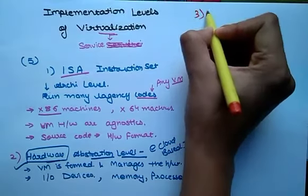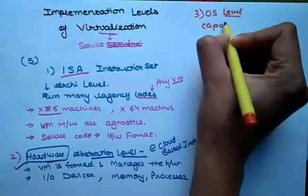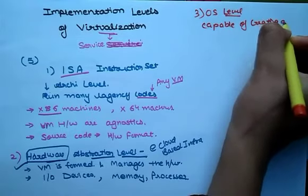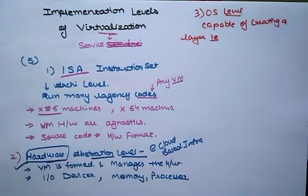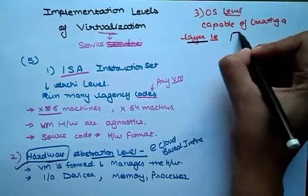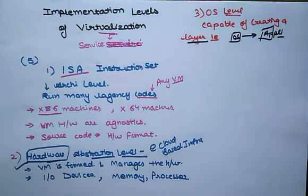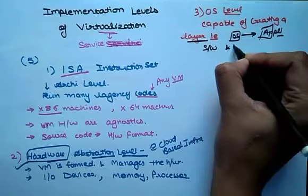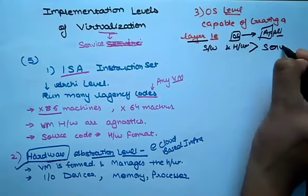The third type is Operating System level. At this level of operating system, the virtualization model is capable of creating an abstract layer between the operating system and the application. This is an isolated container that is on the operating system and the physical server, which makes use of both software and hardware. Each of these then functions in the form of servers.